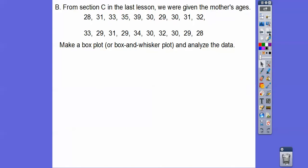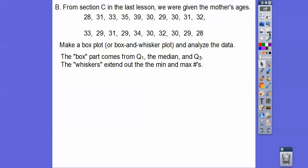So here it is right here. From section C in the last lesson, we were given the mother's ages of the 20 mothers right there. So make a box plot this time, or a box and whisker plot, and analyze the data. I'm finding about half of my students have done box and whisker plots before, so it's not hard. The box part comes from quartile 1, the median, and quartile 3. And then the whiskers extend out to the smallest number and the biggest number.